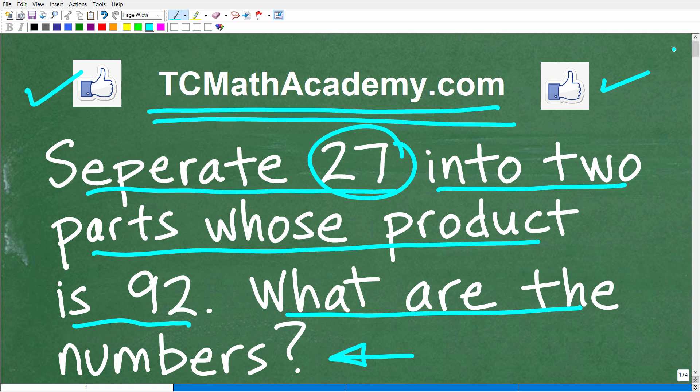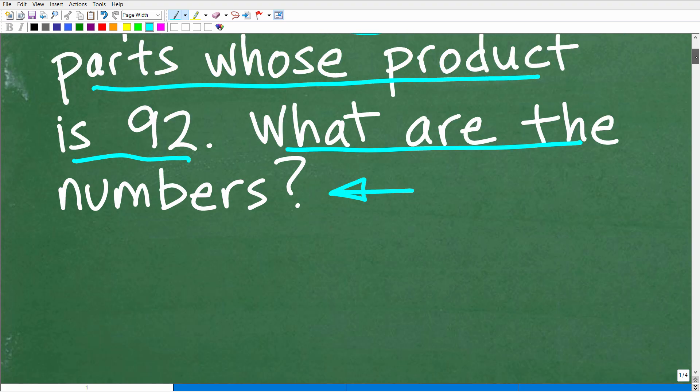Okay, so here is the problem. Separate 27 into two parts, whose product is 92. What are the numbers? Well, let's go ahead and take a look at the answer right now.